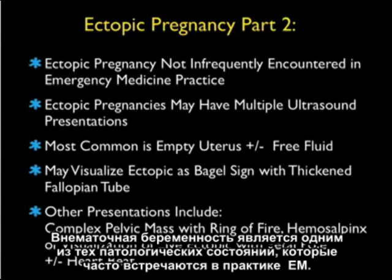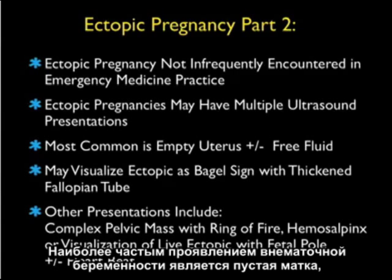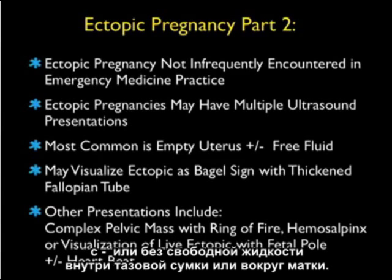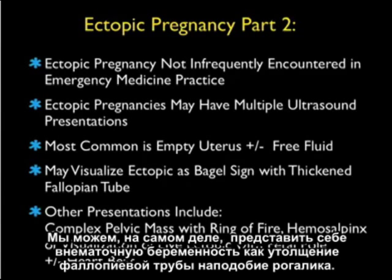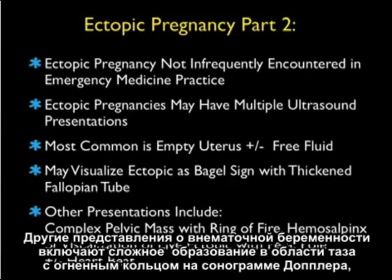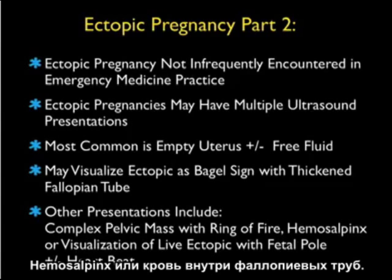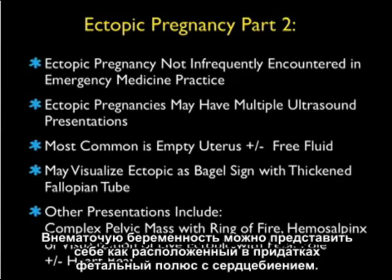Ectopic pregnancy is one of those conditions we'll not infrequently encounter in a busy EM practice. The most common presentation will be an empty uterus with or without free fluid within the pelvic cul-de-sac or surrounding the uterus. We may be able to visualize the ectopic as a bagel sign, which constitutes a thickened fallopian tube. Other presentations include a complex pelvic mass with a ring of fire on Doppler sonography, hemosalpinx or blood within the fallopian tube, or we may actually visualize a live ectopic in the adnexa with a fetal pole and/or heartbeat.